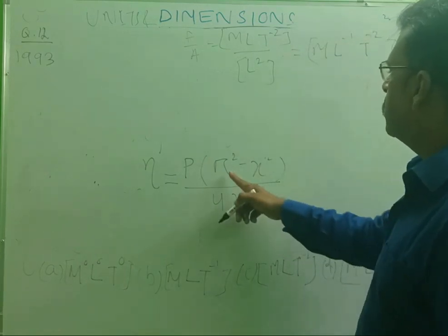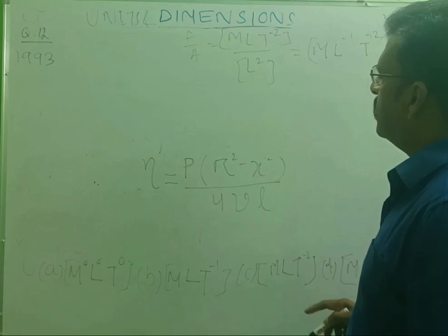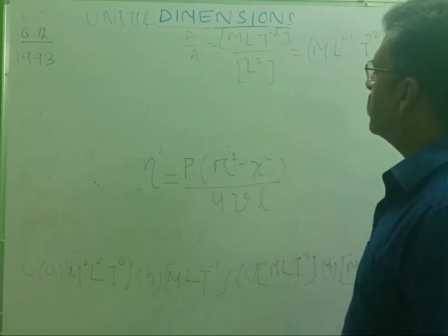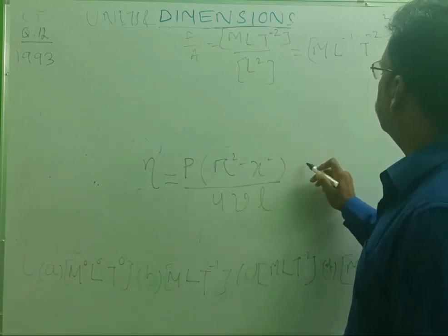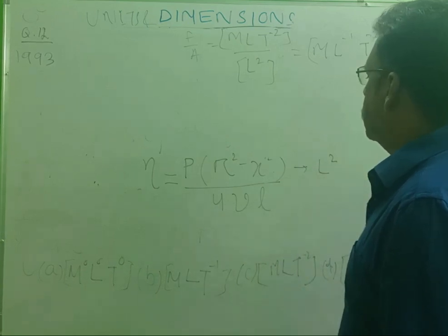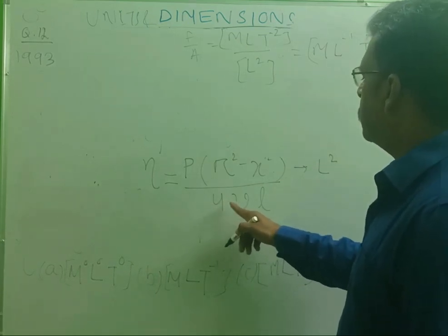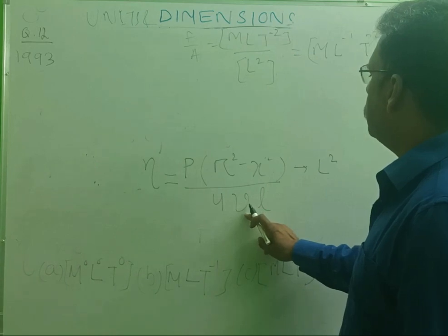And what is R square minus r square? This is length square and this is length square. So dimension will be L square itself. And this is dimensionless. What will be the dimension of V? That will be LT minus 1.